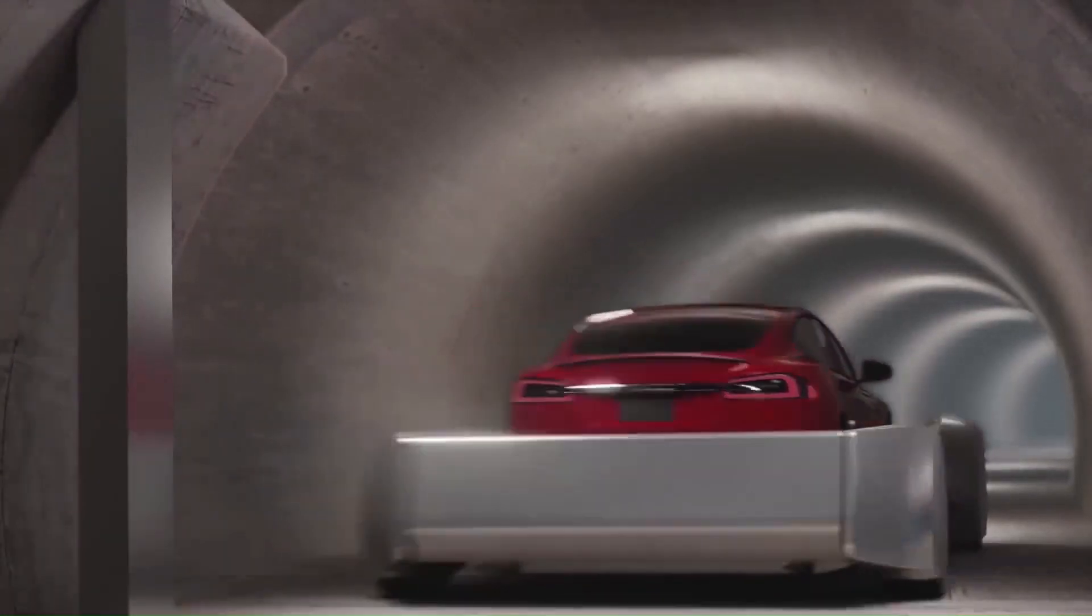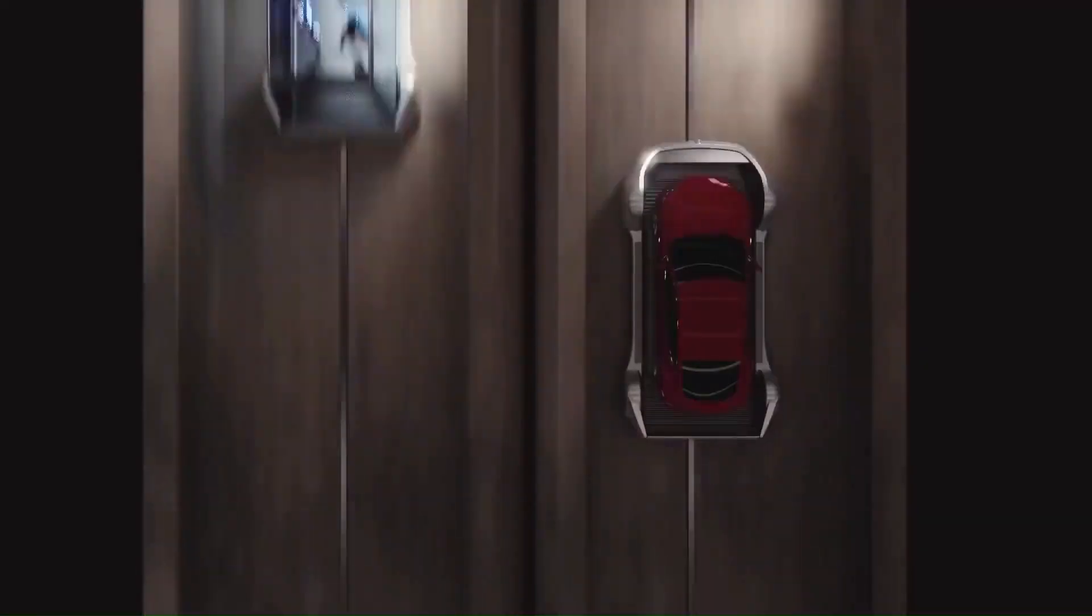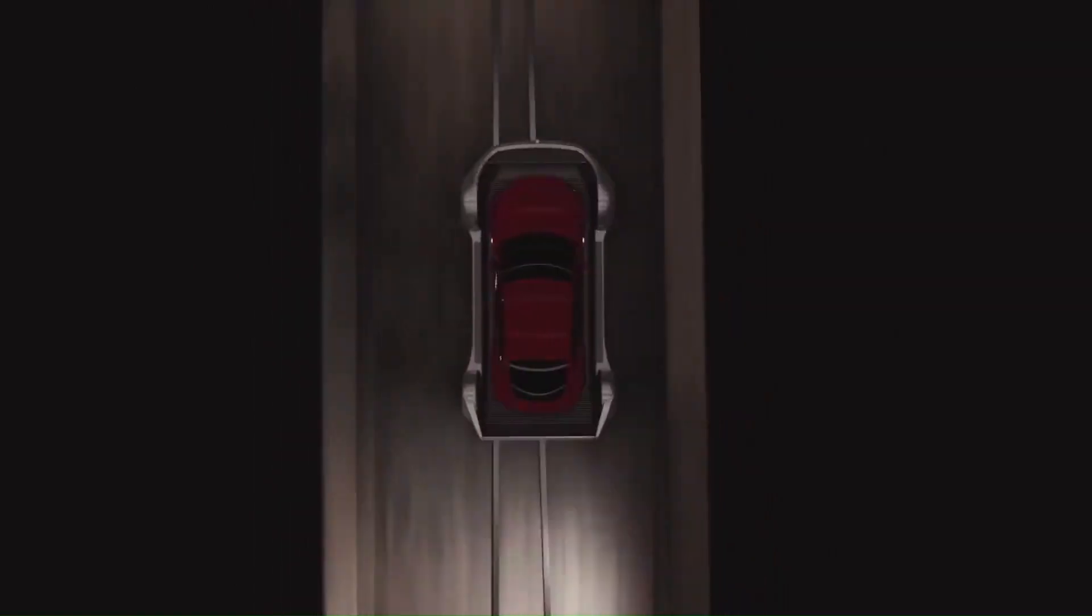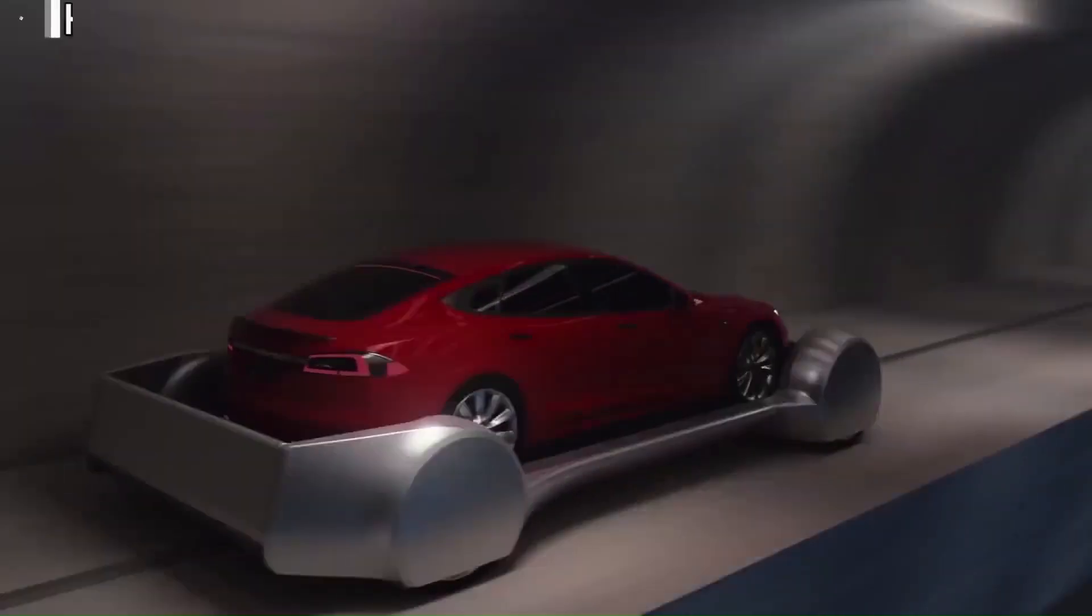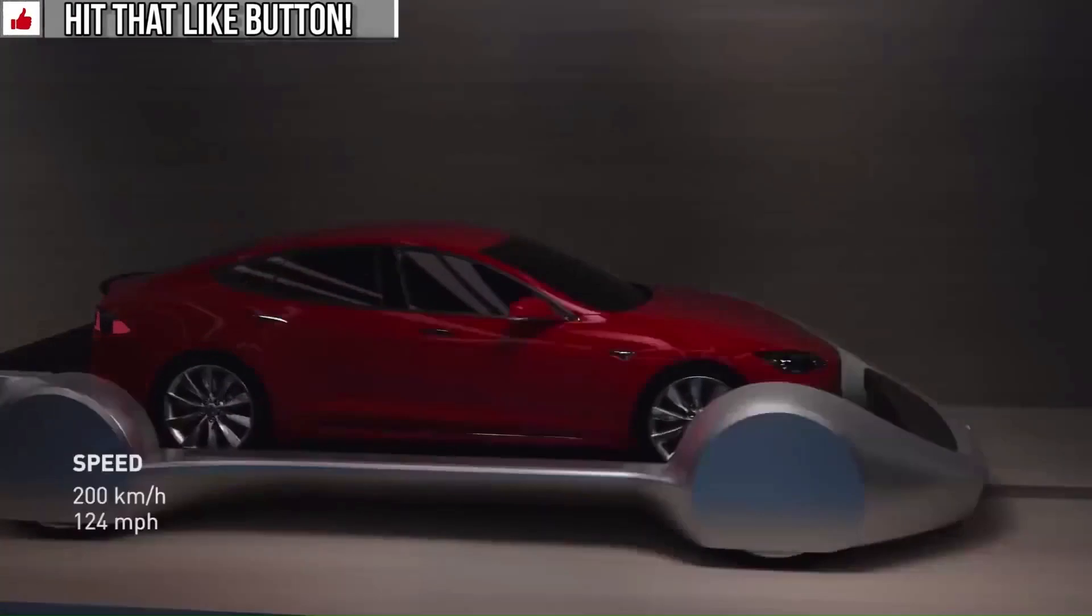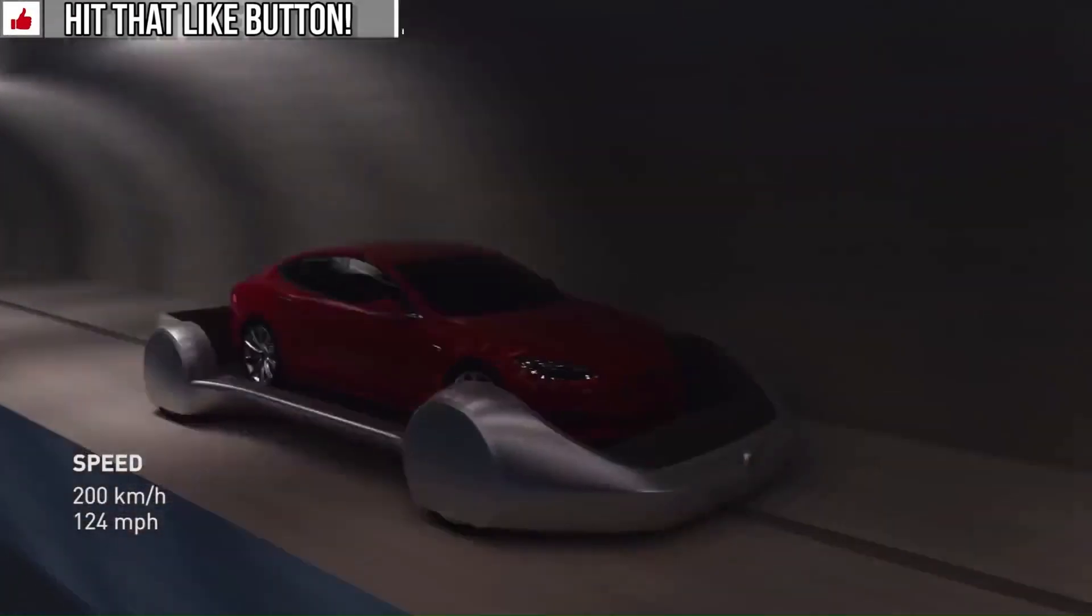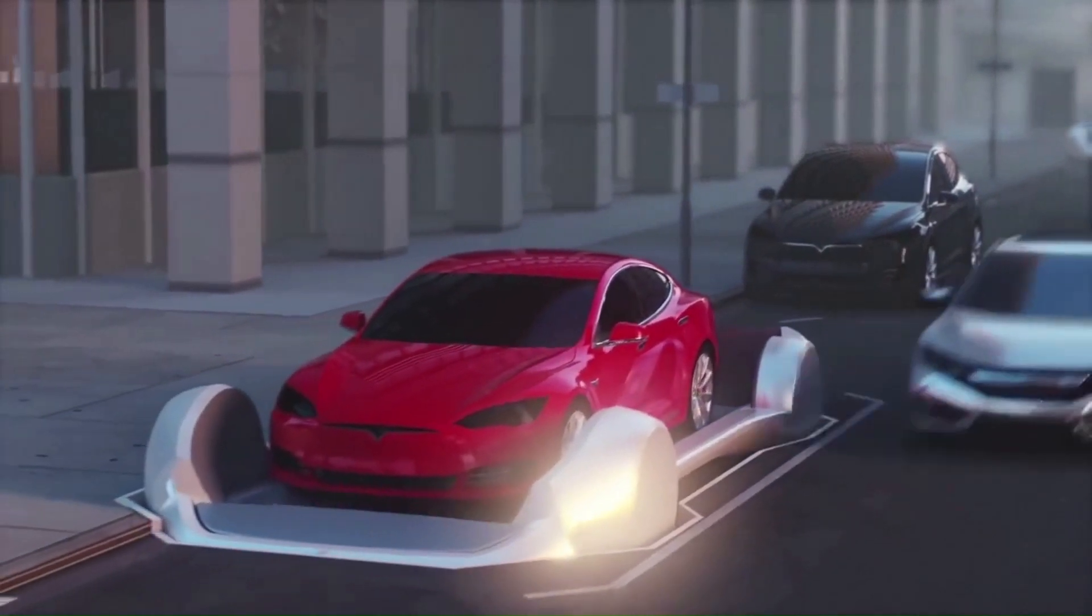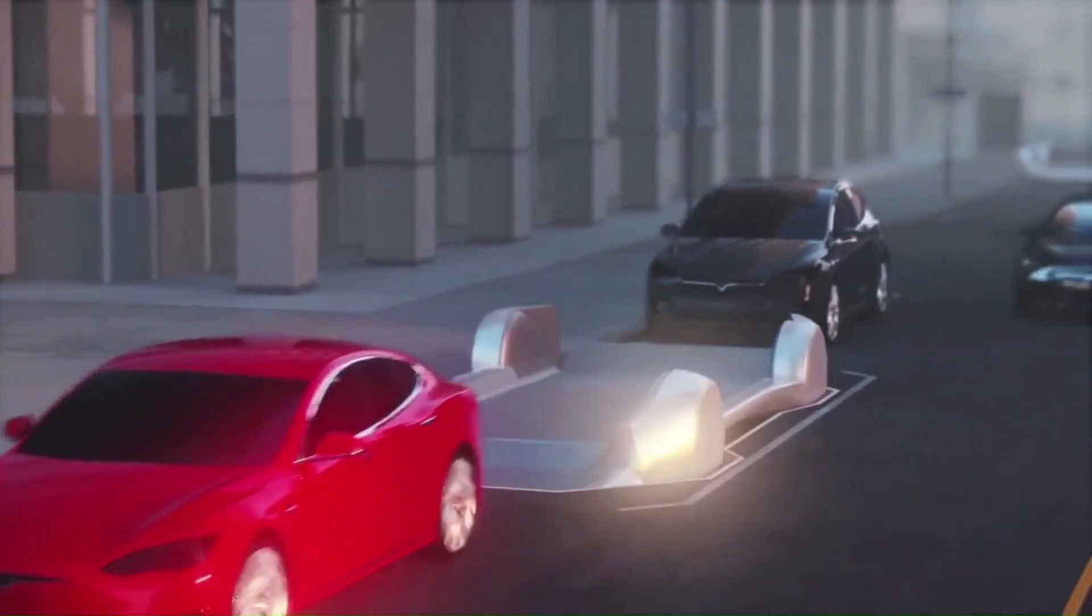In a video released that same year, The Boring Company teased a system in which cars and public transportation pods are lowered underground by metal platforms and proceed to zoom through tunnels at 124 miles per hour, unimpeded by pesky traffic. The problem with tunnels, Musk said during an event unveiling the company's first demo tunnel in 2018, was that they take a long time to build and are very expensive.